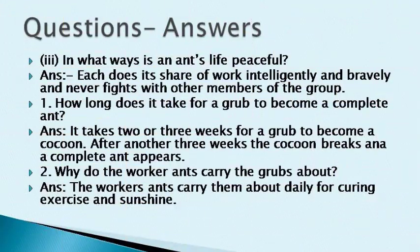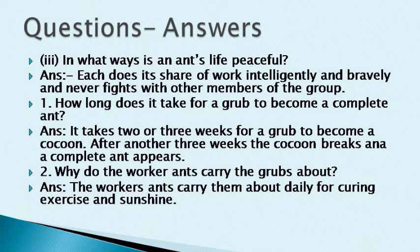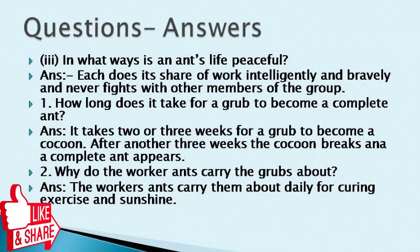In what ways is an ant's life peaceful? All members of the group do their work very well, bravely, and they never fight with each other. Question: How long does it take for a grub to become a complete ant? It takes two or three weeks for a grub to become a cocoon, and after another three weeks, the cocoon breaks and a complete ant appears.